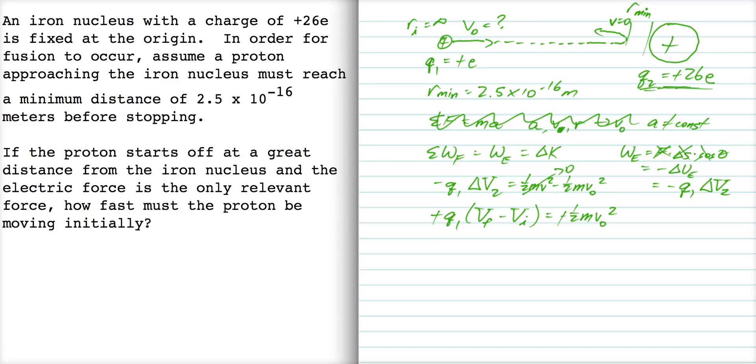Let me substitute in for Vf and Vi. This is q1, and now Vf is kq2 over r min, and Vi is kq2 over infinity. I'm using my formula for absolute potential of a point charge here. That's equal to one-half mv naught squared.